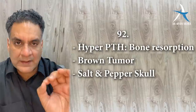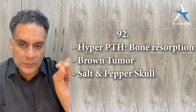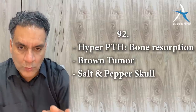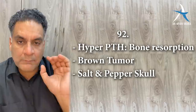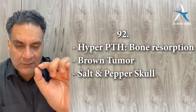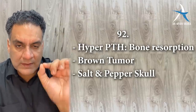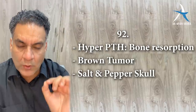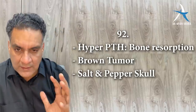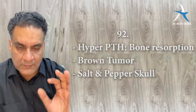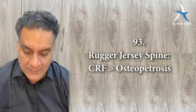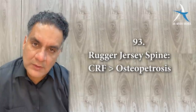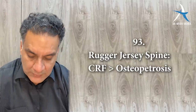Point number ninety-two: in hyperparathyroidism the bones are hollow — brown tumors are lytic cavities filled with blood and blood degradation products giving a brown color — and salt and pepper skull. Point number ninety-three: rugger jersey spine is a feature of CRF (chronic renal failure) more than osteopetrosis. Point number ninety-four: in osteoporosis, DEXA scan is done. If the T-score is less than minus 2.5, diagnose osteoporosis. Screening is done in females above 65 years. Codfish vertebrae are classical and more common in osteoporosis than osteomalacia.